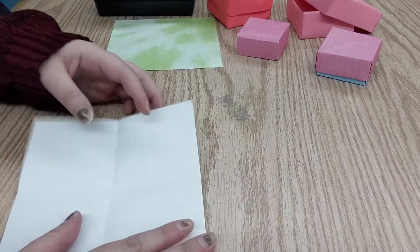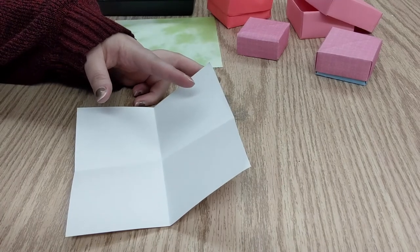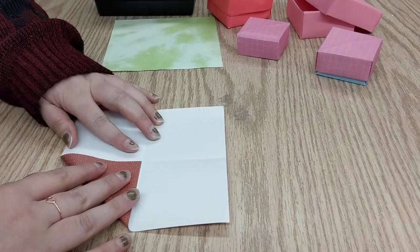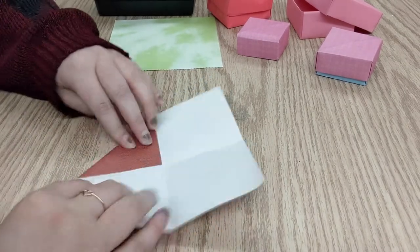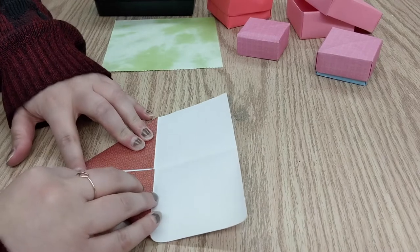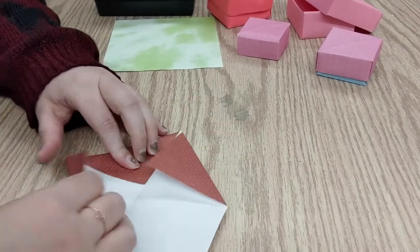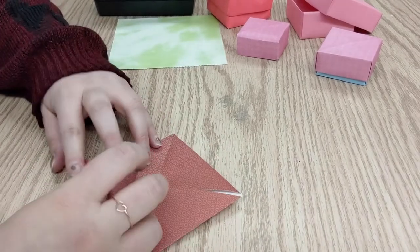So now you have it with four squares. So next up, you're gonna fold everything towards the middle. You're gonna repeat this four times, until you have a square that looks like this.